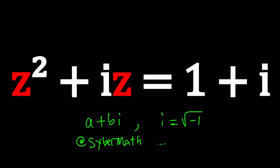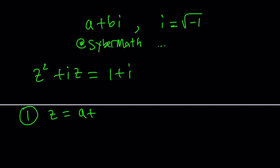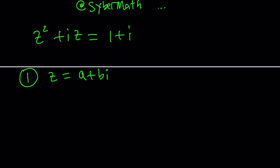So how do we solve an equation like this? I'll be presenting three methods. The first method is basically going to replace z with a plus bi — not just because it's the name of this channel, but also because it solves a lot of problems. Is it going to work in this case? Let's find out.